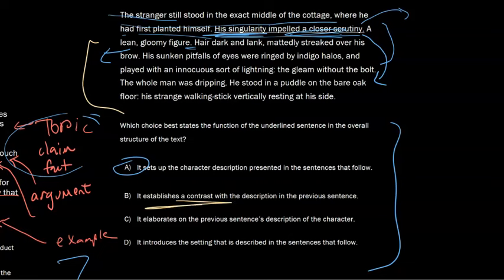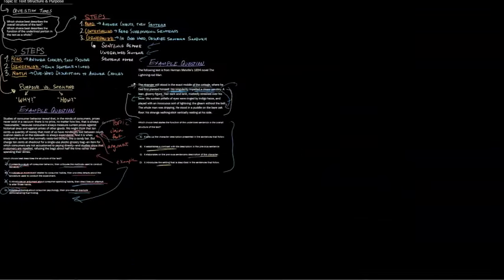There's no contrast. He hasn't moved. He hasn't done anything. There's no description of the character really here. He's in the middle of the cottage. In the middle of the cottage he's a stranger. That's pretty much it. It's not really elaborating on that. It's kind of more elaborating on his looks at this point. Introduce the setting. Not true. That's the first sentence. And that is how you would solve any sort of text structure and purpose question.